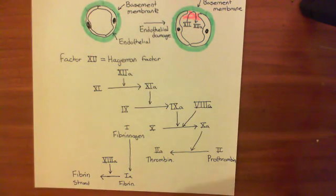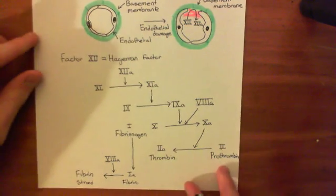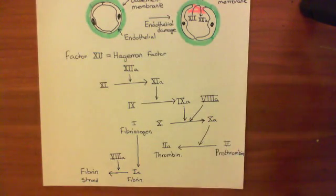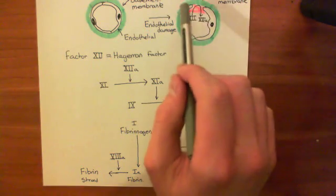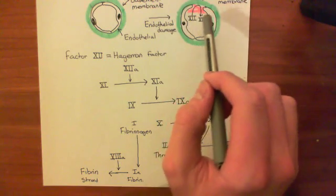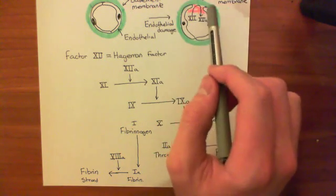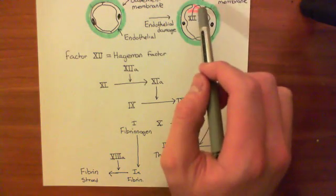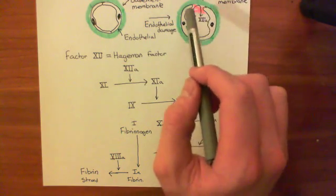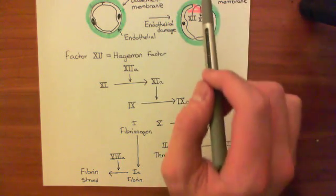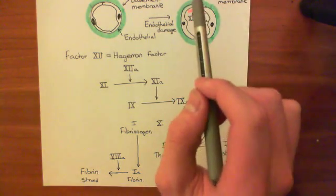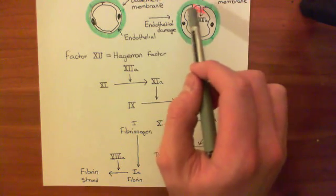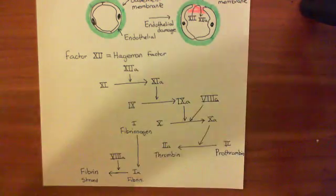That's the intrinsic coagulation cascade. We'll see how it fits in with many other processes, because this is not the full hemostatic plug — there are other important components, such as platelets. But this is the process of coagulation: the conversion of fibrinogen into fibrin to make fibrin strands, which form an important part of the blood clot, or hemostatic plug.